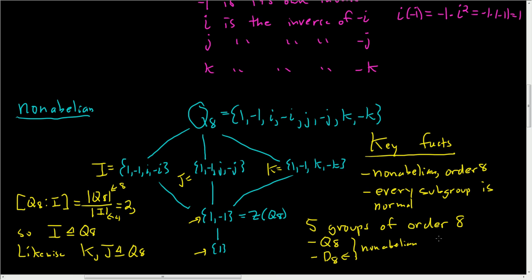And then we have three more groups of order 8. We have the cyclic group, so I'll just use Z8 for that. Then we have the direct product of Z4 with Z2. And lastly, we have the direct product of Z2 cross Z2 cross Z2. So all of these guys here, these are the abelian groups of order 8.